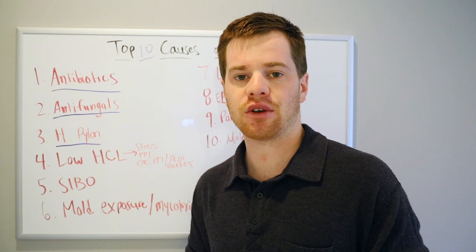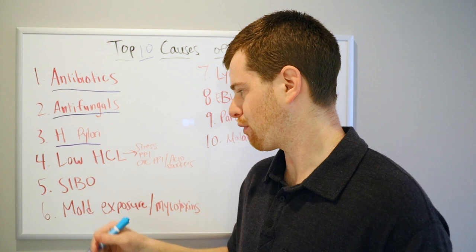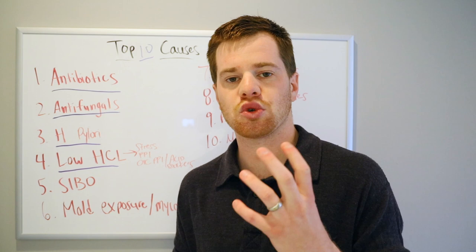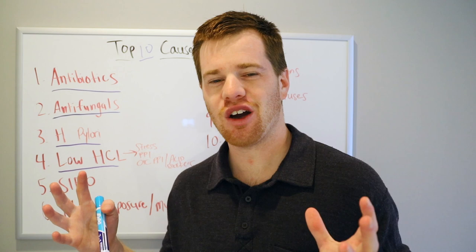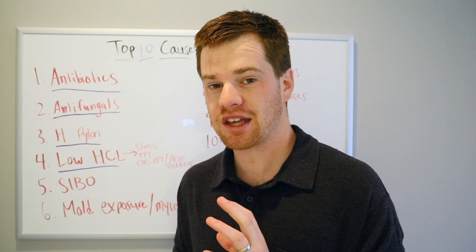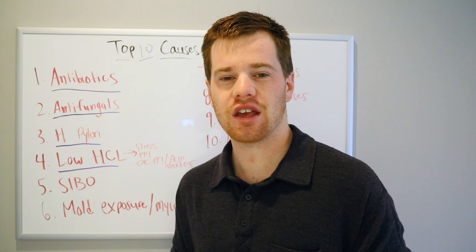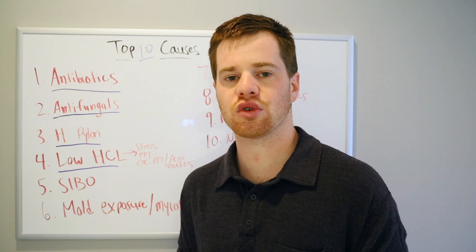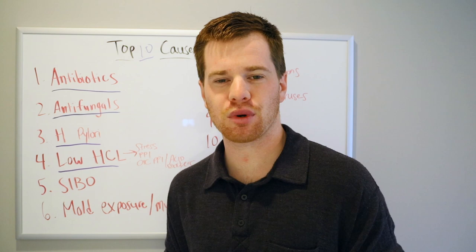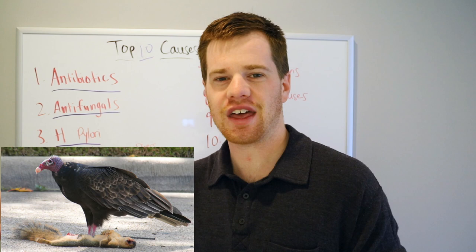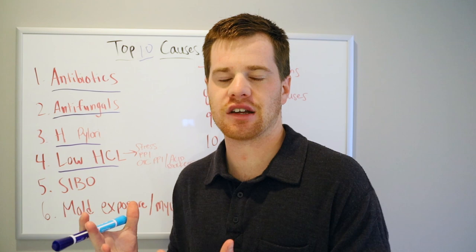H. pylori damages the parietal cells — the stomach acid-producing cells in the gut — which leads us into number four: low HCl. Hydrochloric acid production is necessary to help mitigate Candida, bacterial overgrowth, and parasites. Think of stomach acid as a neutralizer: if you eat bad sushi and have enough HCl, you'll hopefully kill off those pathogens. Dr. Jonathan Wright's book 'Why Stomach Acid is Good for You' found that by age 40, you're making half the HCl you made at age 20. A turkey vulture has the most acidic stomach of any creature on Earth — that's how they can eat rotting roadkill without getting sick. They have so much stomach acid they can kill any bacteria or pathogen they consume.